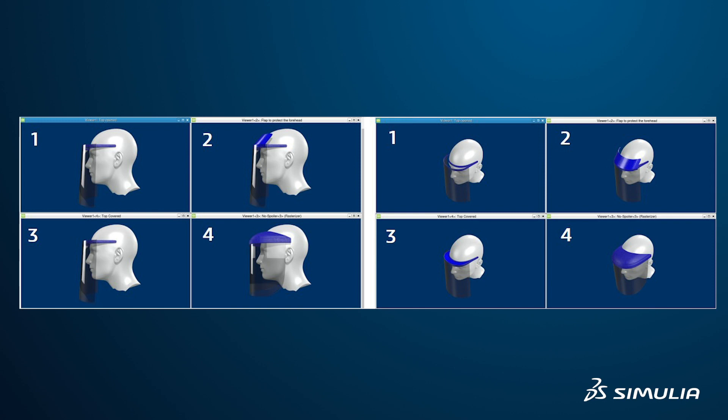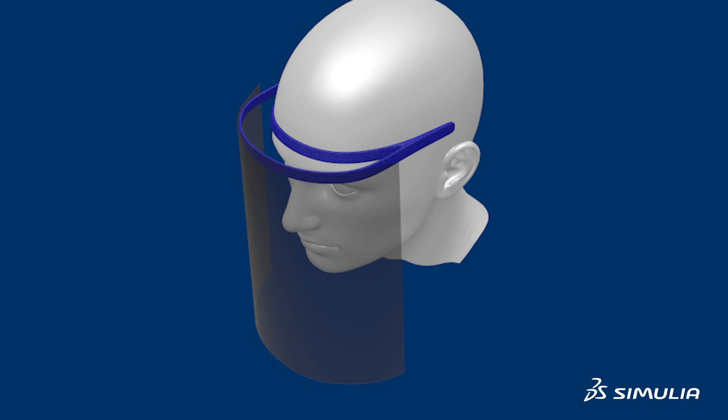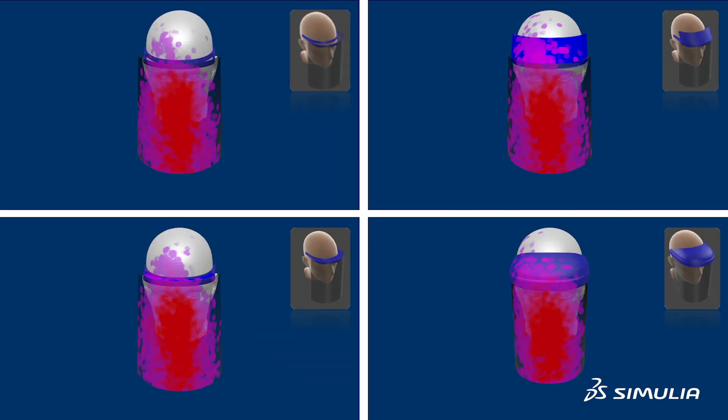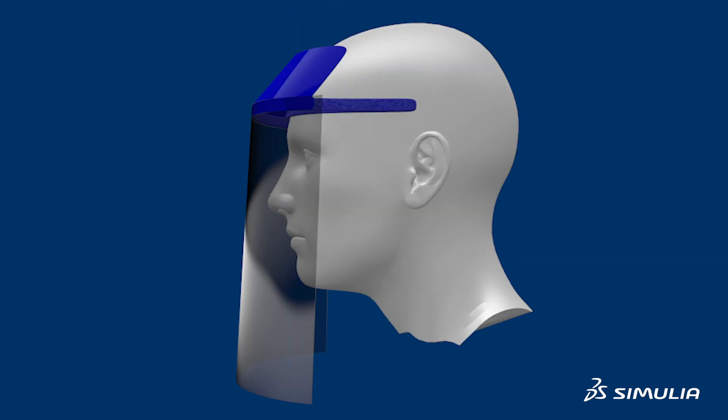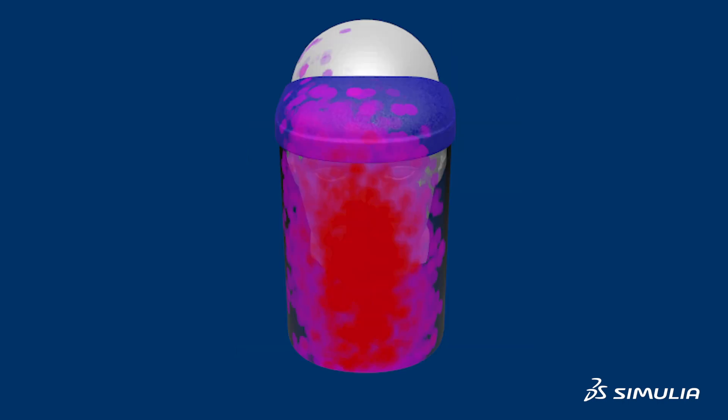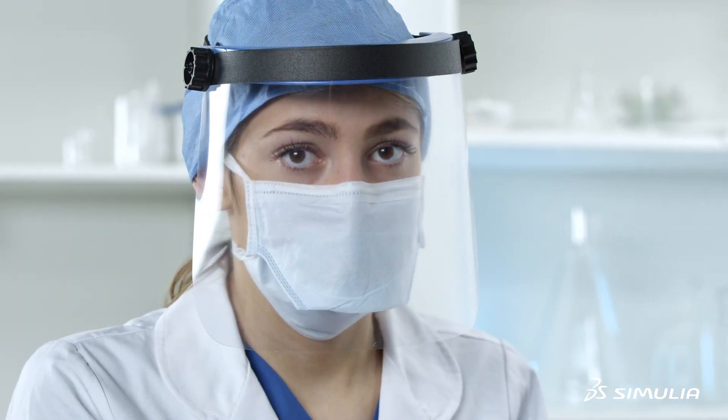We found out that when the headband is widely open, the sneezing droplets can enter from above and contaminate the person's face, especially the area around the eyes. It shows that it's very important to have the headband covered or have a flap that goes over the forehead to reduce the chance of sneezing droplets entering from above.